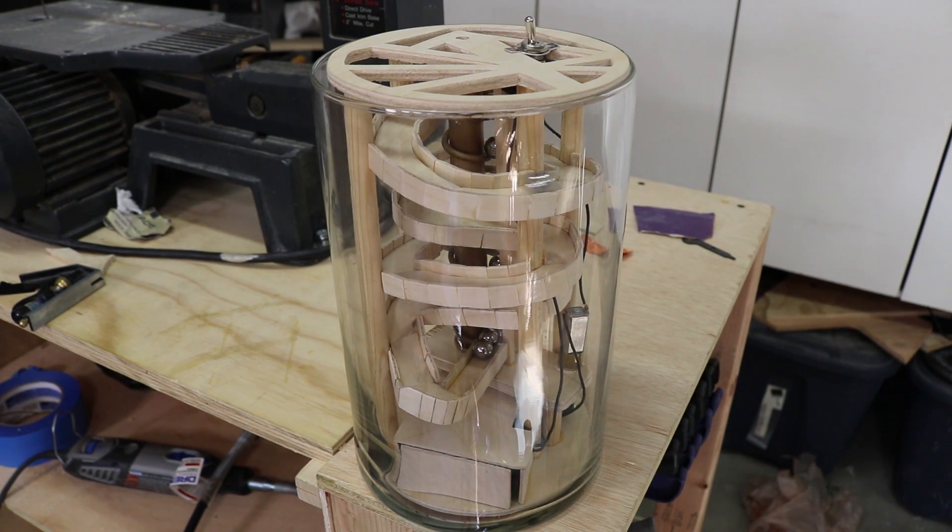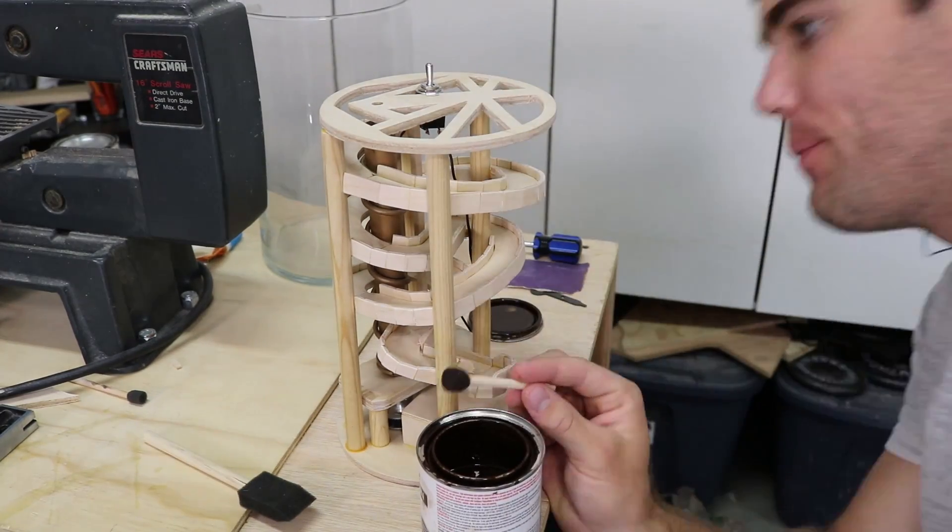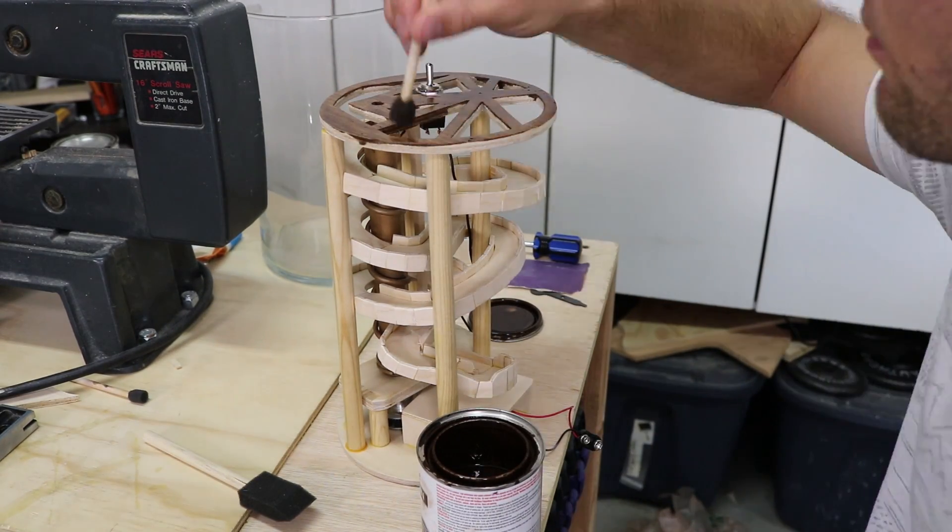After doing all the sanding I ran a test to make sure everything was still working correctly. Once I was sure of that, it was time for staining. Since there are so many nooks and crannies on this small machine, I wouldn't be able to apply the stain like you would on furniture.